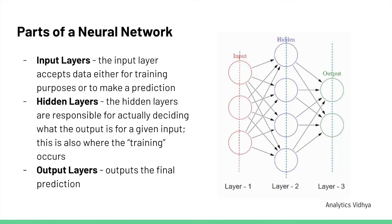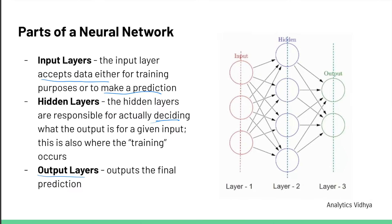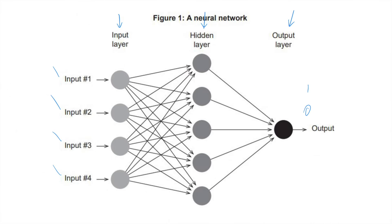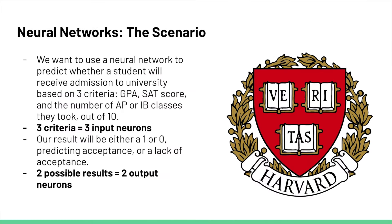To summarize: the input layer accepts data either for training purposes or to make a prediction. Hidden layers are responsible for making decisions, and output layers are responsible for the final prediction. In order for neural networks to accurately recognize patterns, we need to train them. Let's take a look at what that looks like through a scenario.